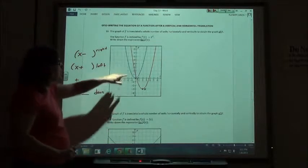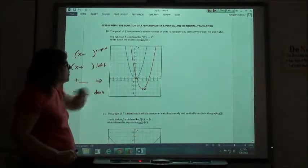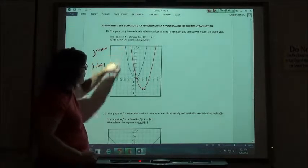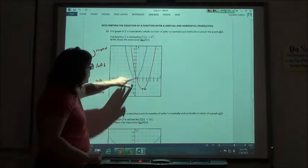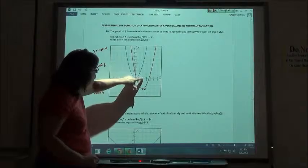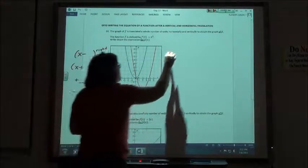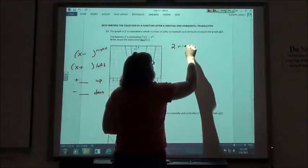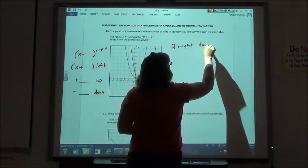And so what we want to do is look at the graph. The original graph is always starting at 0, 0. This is the graph of x squared. We want to translate our graph 2 to the right and down 3.